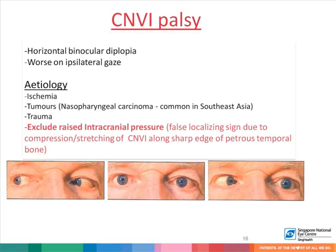The sixth cranial nerve palsy causes horizontal binocular diplopia, which is worse on ipsilateral gaze. Common etiologies include ischemia, tumors — particularly nasopharyngeal carcinoma, which is common in Southeast Asia — and trauma. It is extremely important to rule out raised intracranial pressure in these patients, which can result in a sixth nerve palsy being a false localizing sign, due to compression and stretching of the sixth cranial nerve along the sharp edge of the petrous temporal bone.